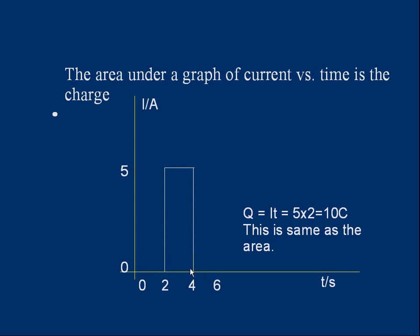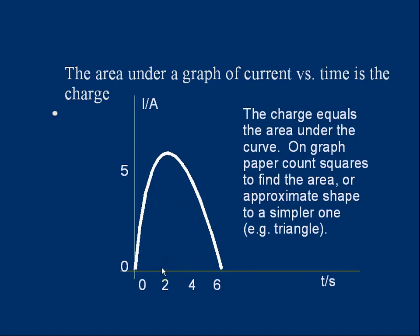And it'll work even if you've got a more complicated graph. Here's a curve showing current going up to maximum, decreasing back to zero. If you want the total amount of charge that's flowed, it's represented by the area under the graph. And if you can work that out, you've worked out the charge. On a practical note, if this was on graph paper, you could count squares to work out the area. Or you could draw a triangle, which was a similar area to the curve shape, and then work out the area of the triangle using half base times height.